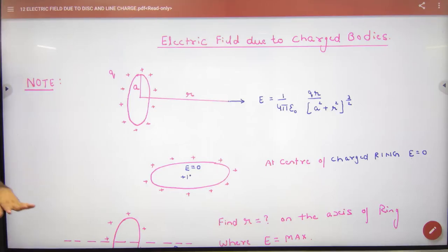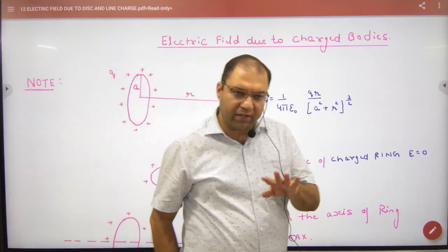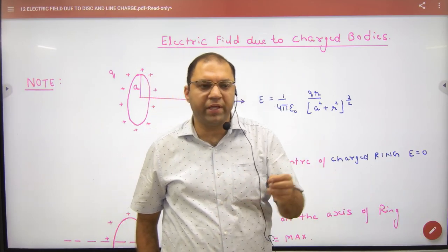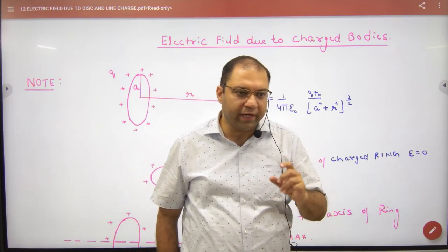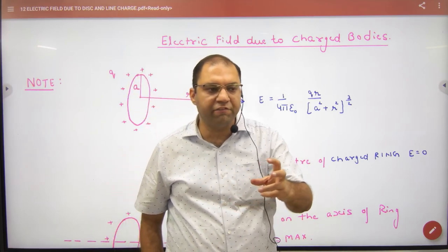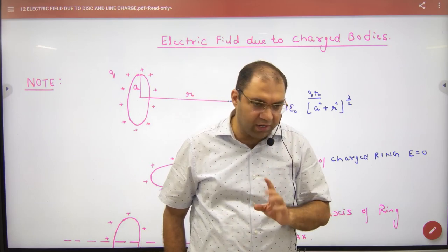Look, what we have done now? We have removed the electric field from point charge. Then we have done a little more improvement. We have removed the electric field charge ring from axis. We have removed the electric field charge ring from center. Last time we have done it.